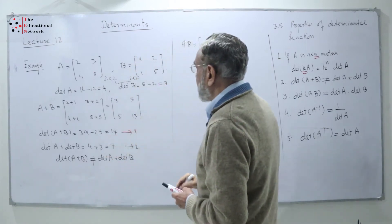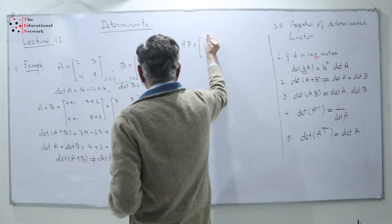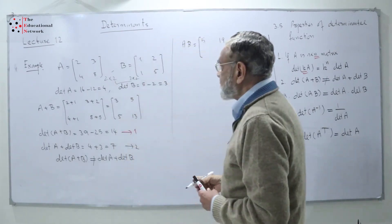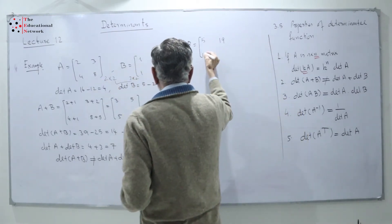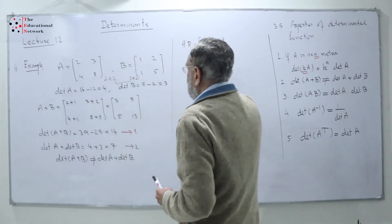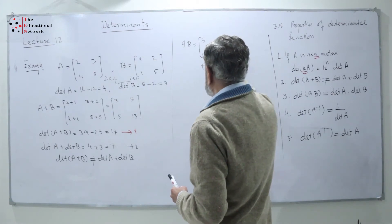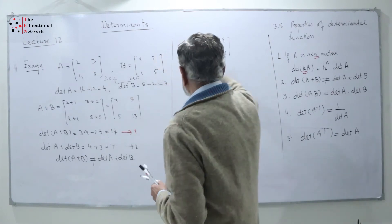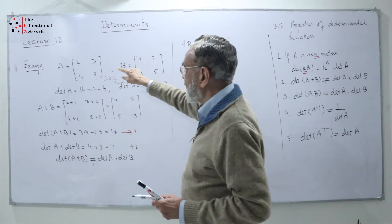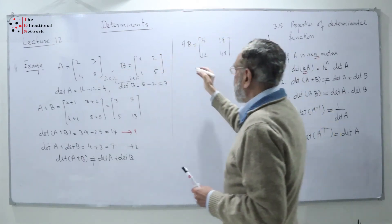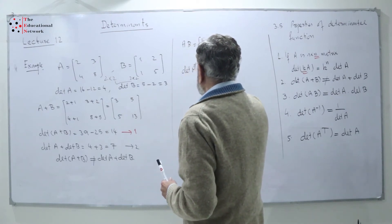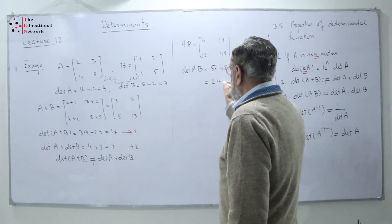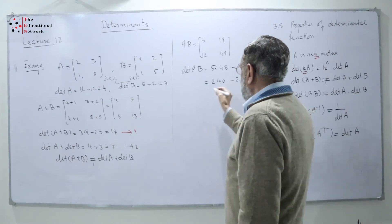Multiplying first row by first column: 2 plus 3 equals 5. First row by second column: 4 plus 15 equals 19. Second row by first column: 4 plus 8 equals 12. Second row by second column: 8 plus 40 equals 48. So AB is the matrix 5, 19, 12, 48. The determinant of AB equals 5 times 48 minus 12 times 19: that is 240 minus 228 equals 12.